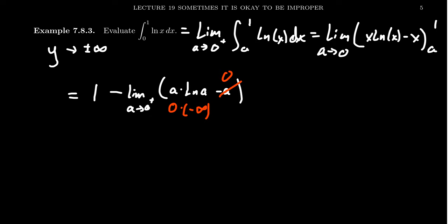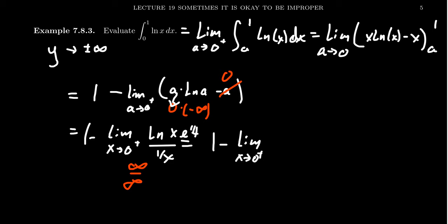And so, to resolve this indeterminate form, I'm going to rewrite this as a product. We're going to rewrite it as an x now. We're going to bump the a to the bottom. So, we get the natural log of x sitting over 1 over x. So, by L'Hopital's rule, because this now has the form of infinity over infinity. By L'Hopital's rule, this will look like 1 minus the limit as x approaches 0 from the right of the derivative of the natural log is 1 over x. The derivative of 1 over x is negative 1 over x squared. That simplifies just to be a negative x.